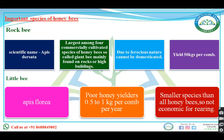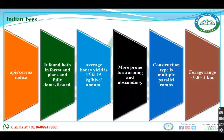Next is little bee — it is Apis florea. It gives poor yield of honey and is the smallest species among all honeybees; they are not economically reared. Indian bee is Apis cerana indica. Indian bees are more prone to swarming and absconding and they construct parallel combs.